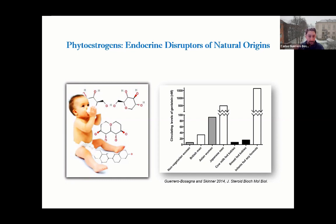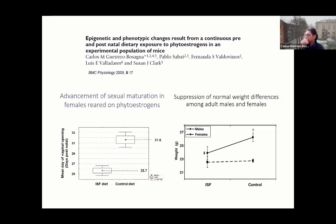In the next slides we'll see how this can affect reproduction using the mouse experimental model. This was an experiment performed during my PhD, in which we exposed one population of mice to high levels of phytoestrogens and another population to low levels.